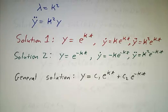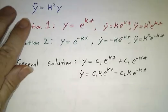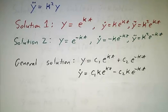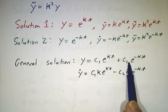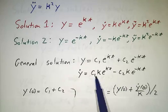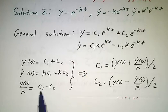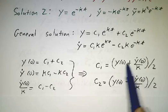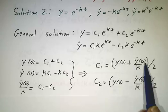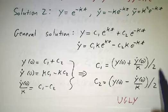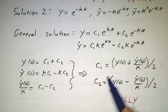Let's figure out what these constants are in terms of initial conditions. The derivative is c₁κe^(κt) − c₂κe^(-κt). Plugging in t = 0: y(0) = c₁ + c₂, and ẏ(0) = c₁κ − c₂κ. Dividing by κ: c₁ + c₂ = y(0) and c₁ − c₂ = ẏ(0)/κ. You can solve for c₁ and c₂, but the trouble is that's ugly — not a simple, intuitive form for the solution.